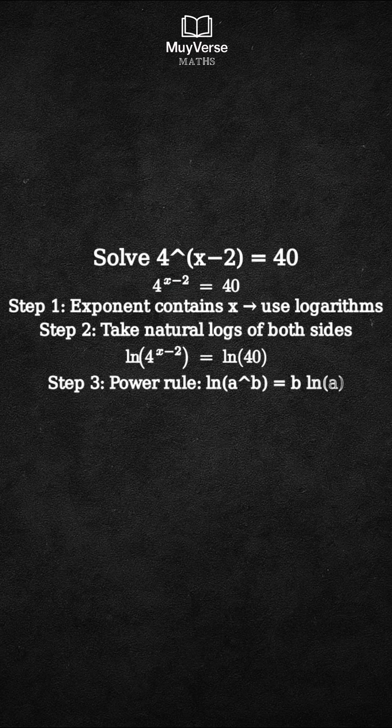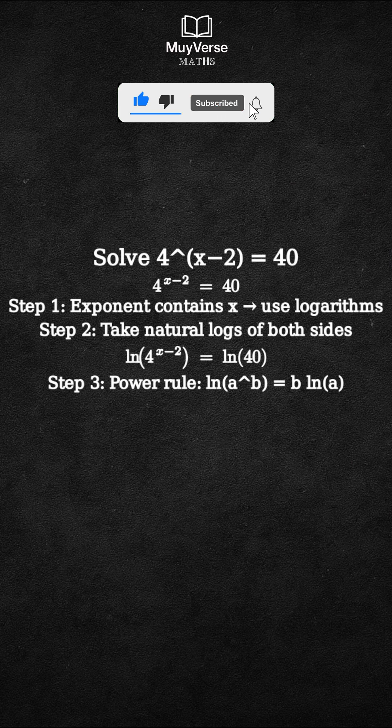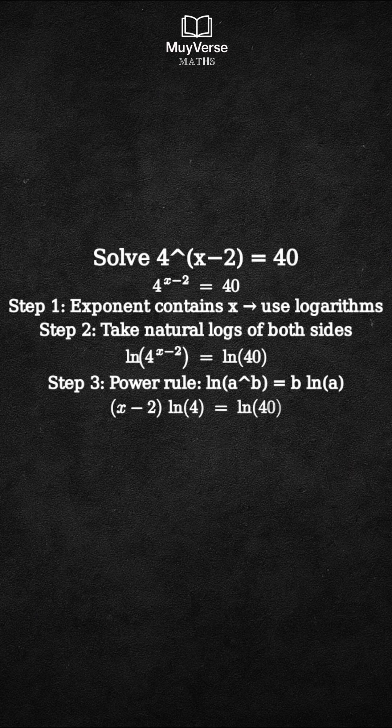Step 3: Use the power rule for logarithms. The natural log of a to the b equals b times the natural log of a, so we bring x minus 2 in front.